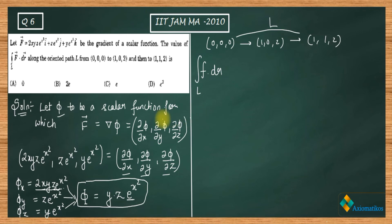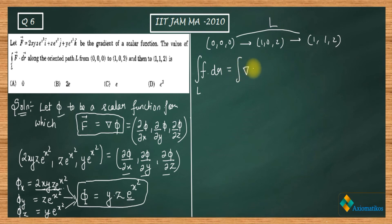We have proved that f equals del phi. If you have studied vector calculus, this means f is a conservative vector field. In the case of a conservative vector field, the line integral does not depend upon the path — it depends only upon the initial and the final point.